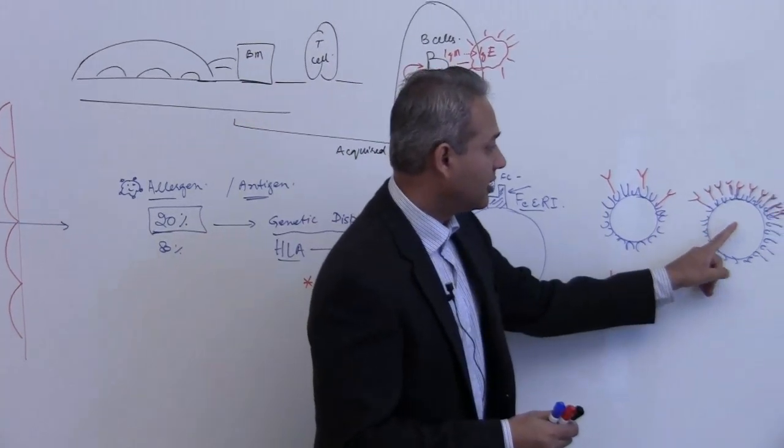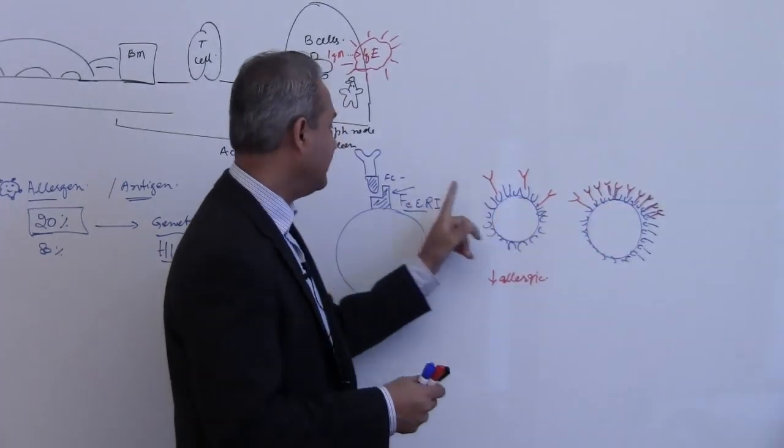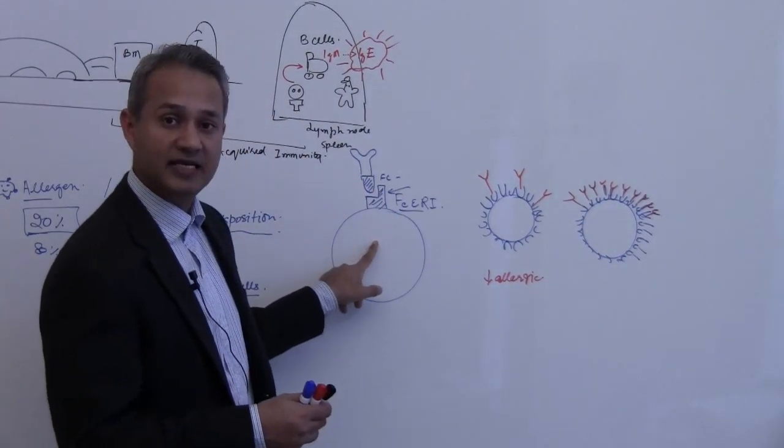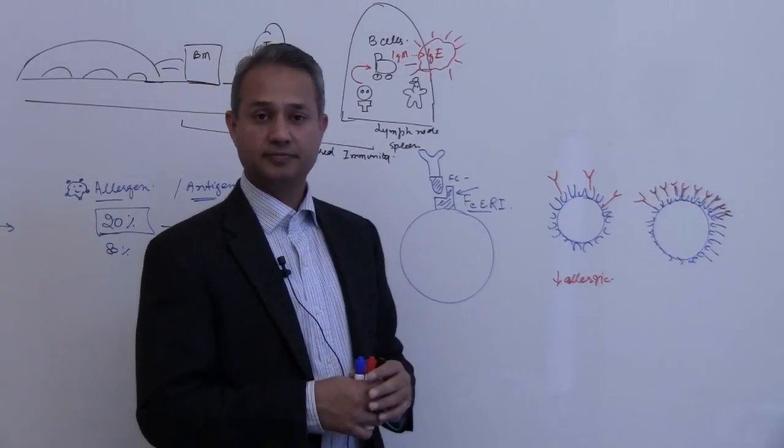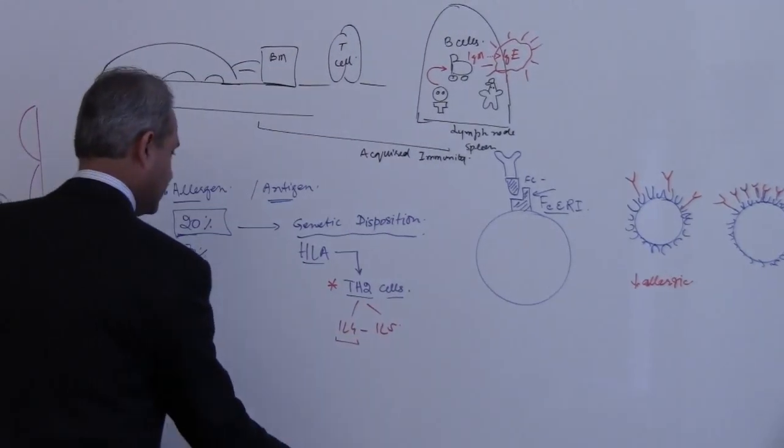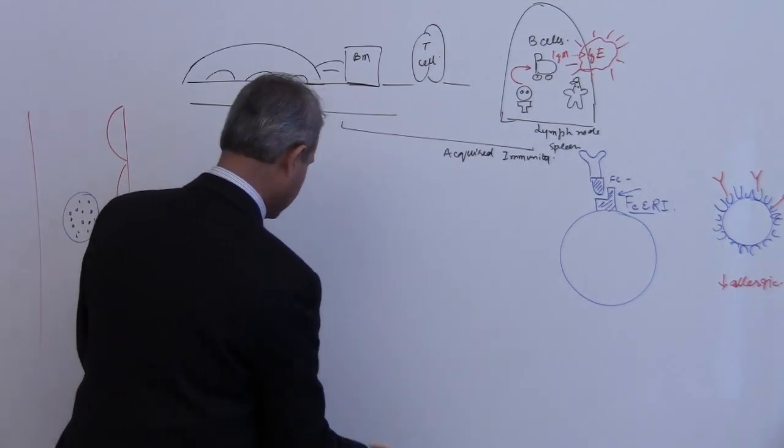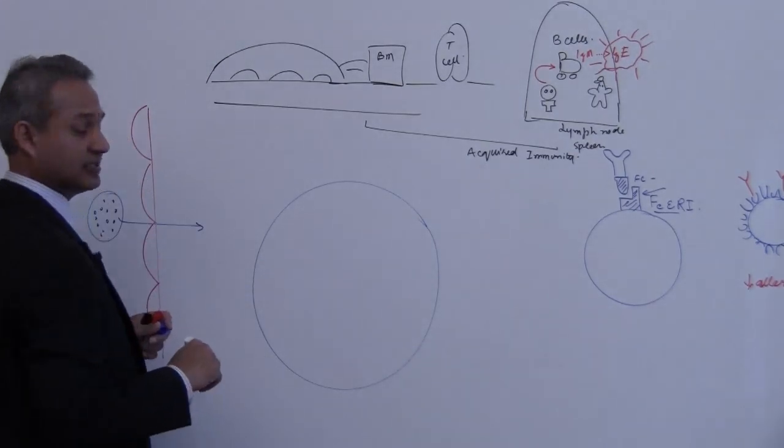We were talking about IgE. When the Fc portion of the IgE occupies the receptor on the mast cell, that is a very dangerous combination. Let me explain why. This is what happens - let's say this is a mast cell.